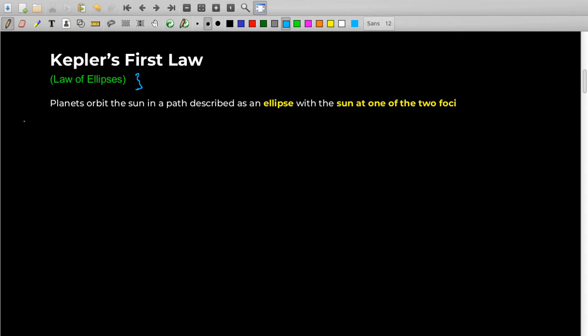Let's see the first Kepler's law, which is also called the law of ellipses. The statement says that planets orbit the Sun in a path described as an ellipse with the Sun at one of the two foci. Let's try to understand this. I hope you all might be knowing about ellipse.